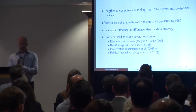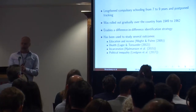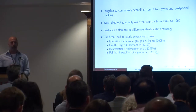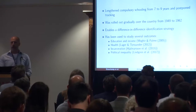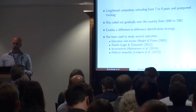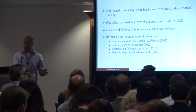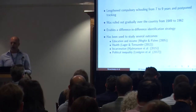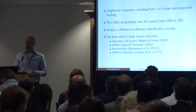Not many of you are probably familiar with this particular Swedish reform, so I'll spend some time on it to set the study into context. There are two main features of this school reform. First, it lengthened compulsory schooling from seven to nine years. Second, it postponed tracking. In the pre-reform system, more able students were selected into the theoretically oriented junior high school at age 11, whereas less able students remained in the basic school until they completed seventh grade.